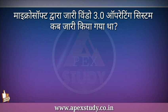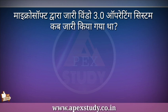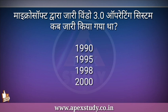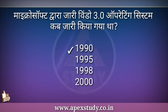अगला प्रश्न: Microsoft द्वारा Windows 3.0 operating system कब जारी किया गया था? Options: 1990, 1995, 1998, 2000। Windows 3.0 सन 1990 में जारी किया गया था।